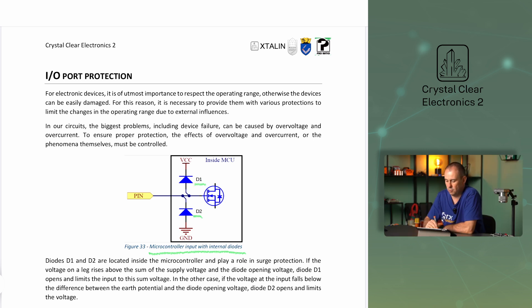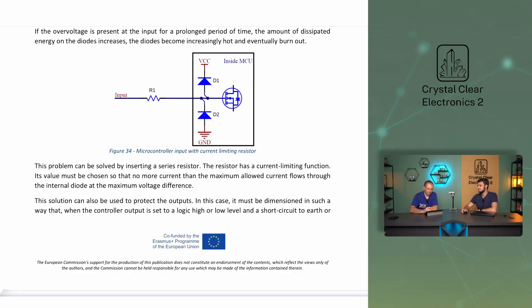Diodes D1 and D2 are located inside the microcontroller and play a role in surge protection. If the voltage on a leg rises above the sum of the supply voltage and the diode opening voltage, diode D1 opens and limits the input to this sum voltage. In the other case, if the voltage at the input falls below the difference between the earth potential and the diode opening voltage, diode D2 opens and limits the voltage. If the overvoltage is present at the input for a prolonged period of time, the amount of dissipated energy on the diodes increases, the diodes become increasingly hot, and eventually burn out. This problem can be solved by inserting a series resistor, which has a current limiting function. Its value must be chosen so that no more current than the maximum allowed current flows through the internal diode at the maximum voltage difference.